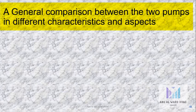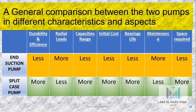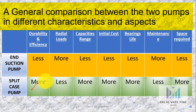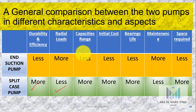Here is a general comparison between the two pump types across different characteristics. For durability and efficiency, the end suction pump scores lower while the split case pump scores higher — advantage: split case pump. For radial loads, the end suction pump has higher radial loads and the split case pump has lower radial loads — advantage: split case pump.